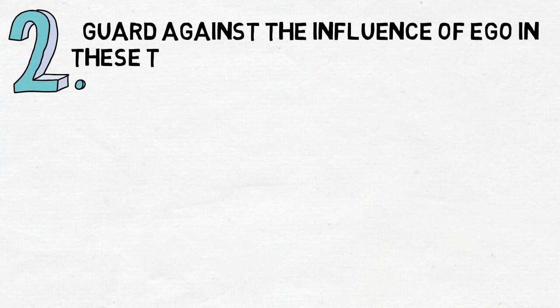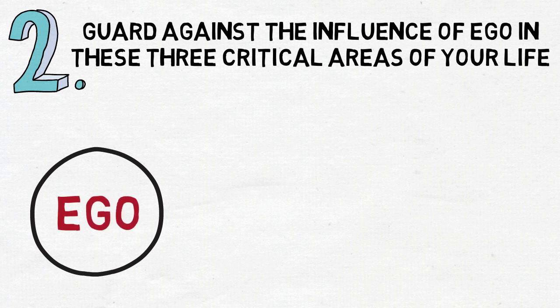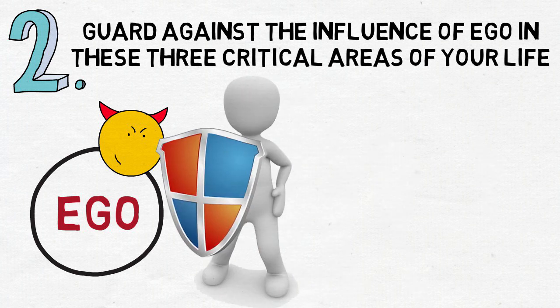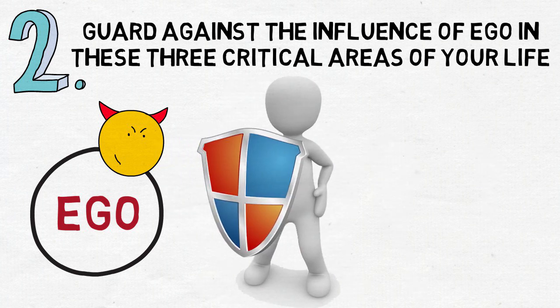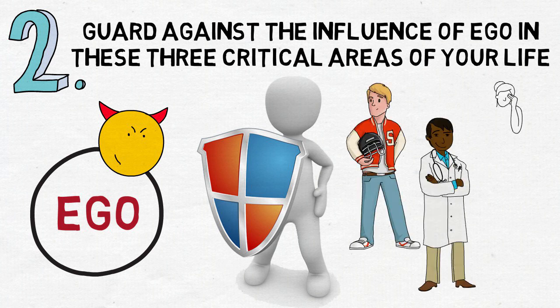Number two, guard against the influence of ego in these three critical areas of your life. In the book, the author notes that even though ego can negatively influence all areas of our life on a foundational level, because our lives are in one of three phases, we need to guard against the influence of ego in three important areas: aspirations, success, and failures.